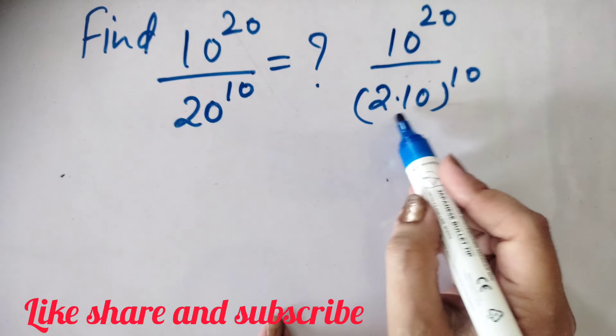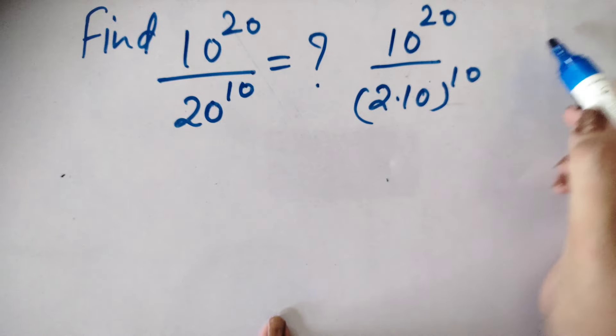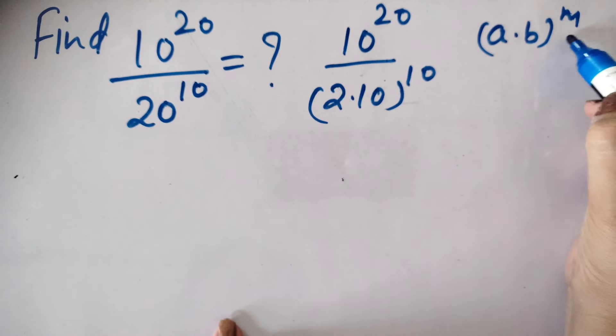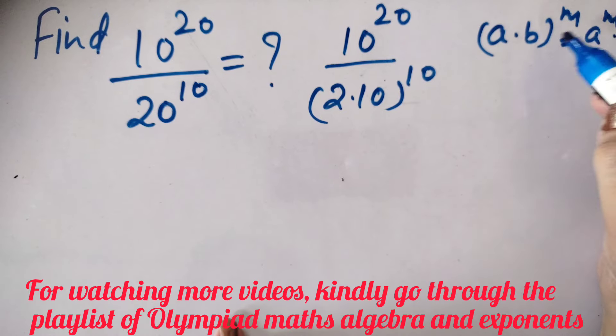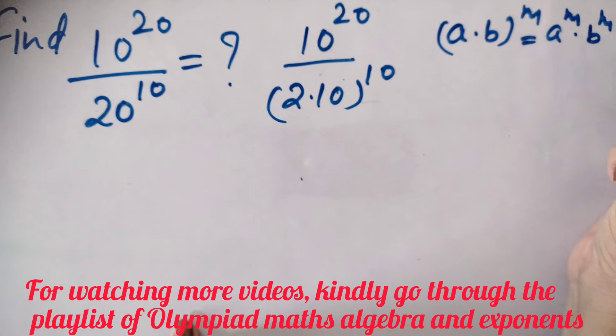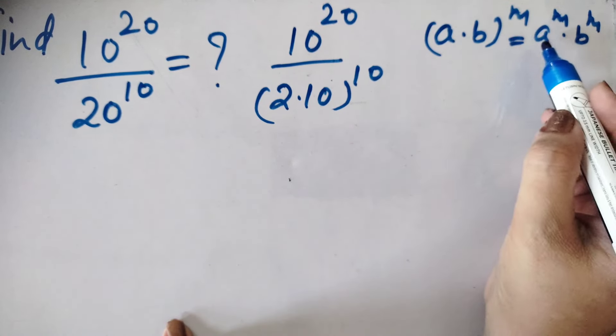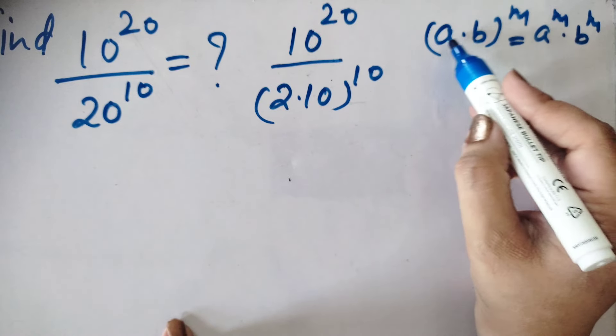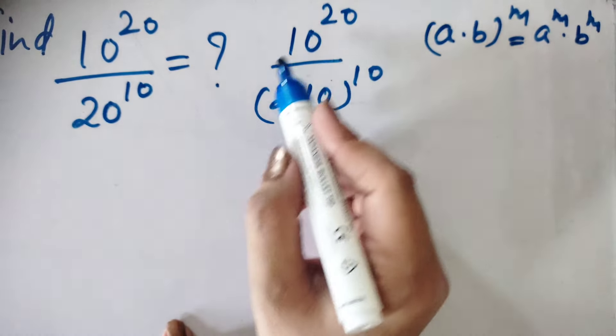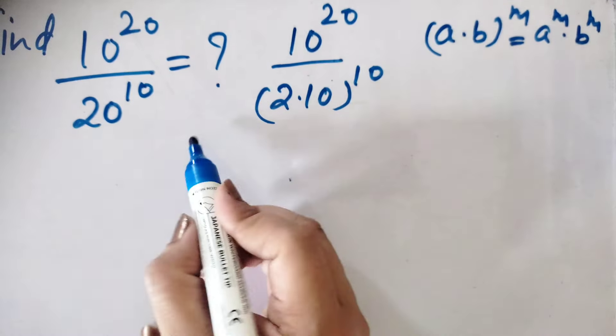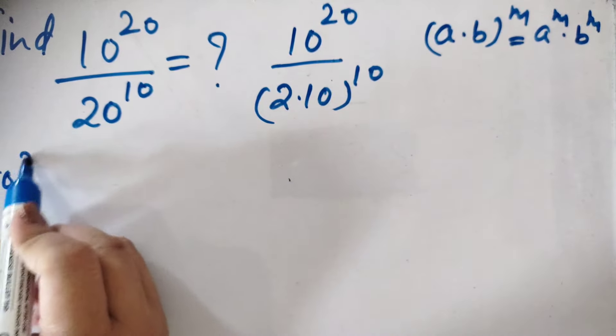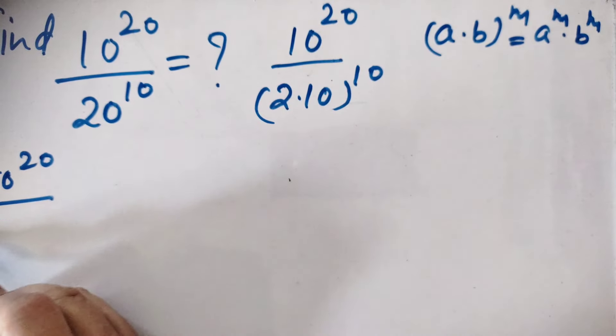After that you can see we are using here law of exponent, law of exponent is a dot b whole power m. So this law says a power m into b power m. If a into b whole power m, we will write separately this power to each number a power m and b power m, so similarly we will here, we are using this law here.